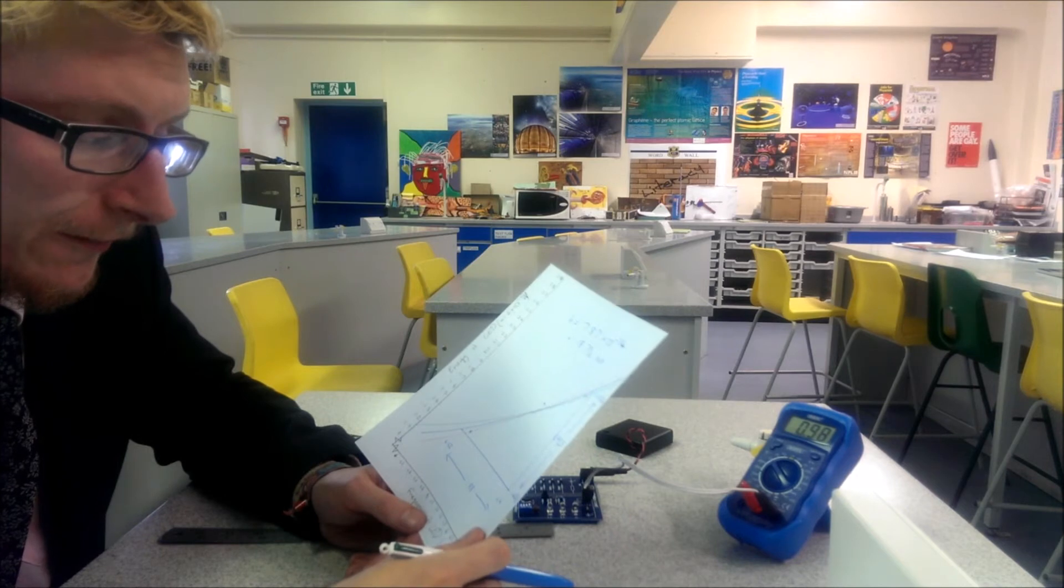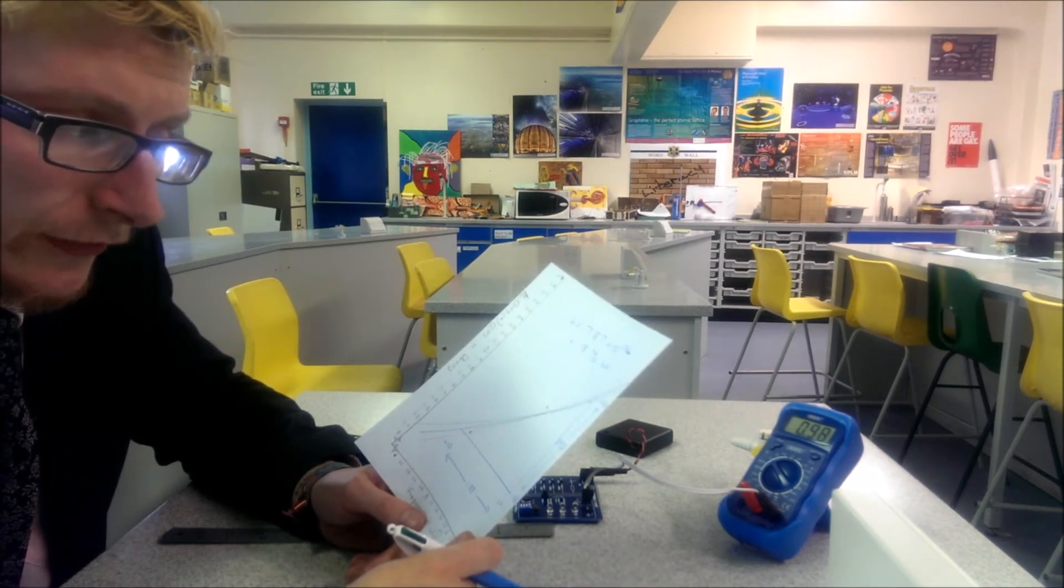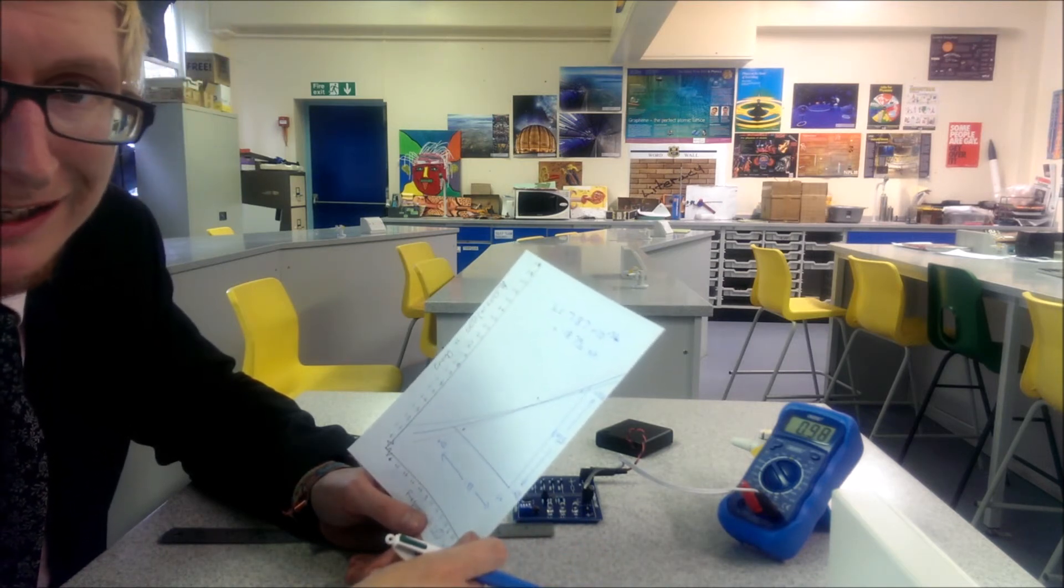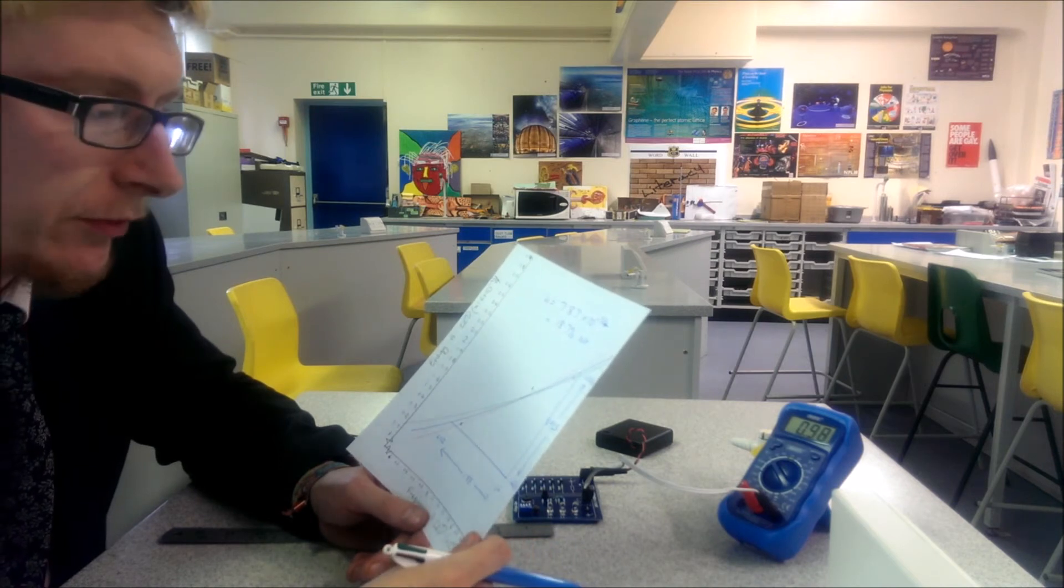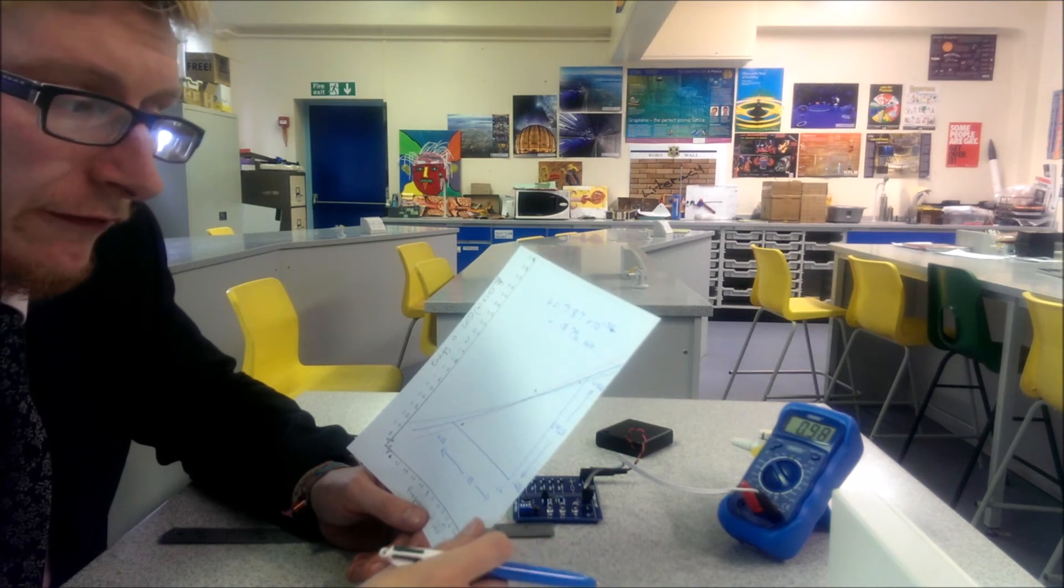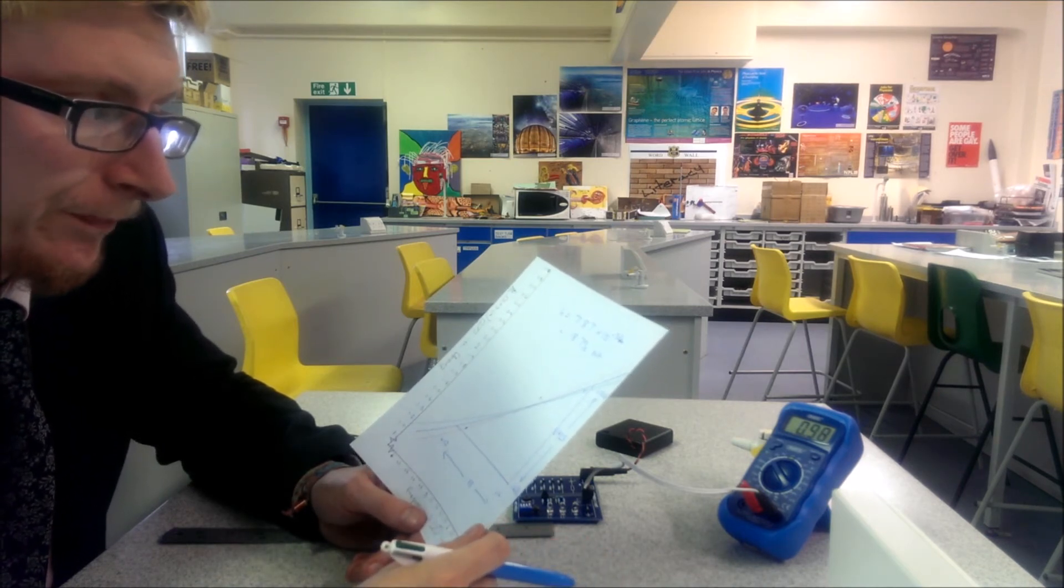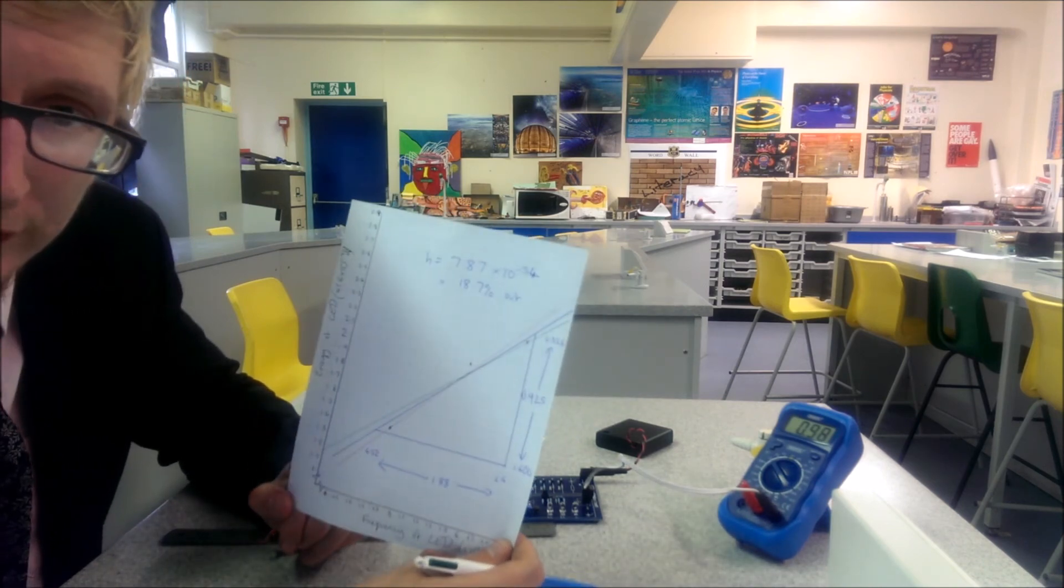We can reduce these errors further by effectively getting more data points and refining the actual angle of our line of best fit or being more precise on the wavelengths of our LEDs. If you can find one made by a very good manufacturer who provides very tight specifications for their LEDs, then you might find one which you can be reliable about the wavelength for. In any case, that is how you determine Planck's constant using LEDs.